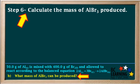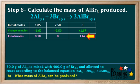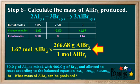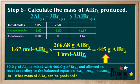In step 6, we convert the moles of aluminum bromide produced into mass. The ICF chart tells us we produced 1.67 moles of AlBr3, so we multiply by the molar mass of aluminum bromide, 266.68 grams per mole. Canceling out the moles gives us 445 grams of aluminum bromide, rounded to three significant figures.